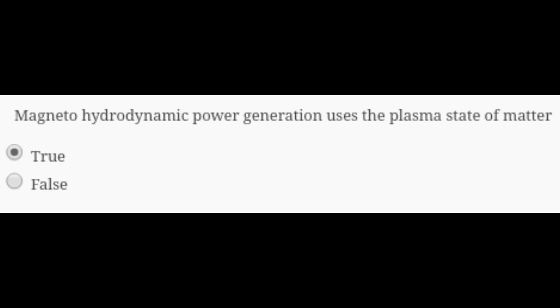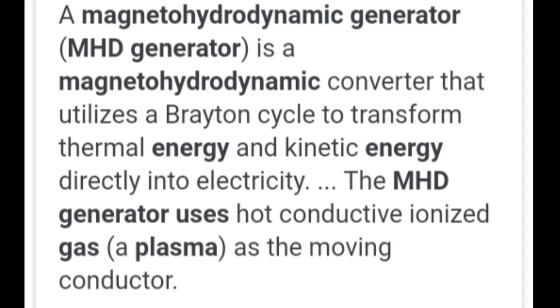Now taking the sixth question: magnetohydrodynamic power generation uses the plasma state of matter. It is absolutely true. You can see the proof from this picture. In the last line it is written that the MHD generator uses hot conductive ionized gas, a plasma, as a moving conductor. So the answer for the sixth question is true.